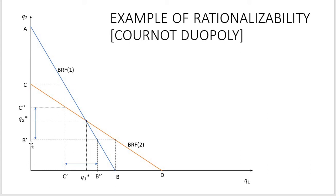So here we explain how rationalizability — trying to predict the strategy of the other player based on available information and best responses — can help players achieve Nash equilibrium. That's it, thank you for your attention.